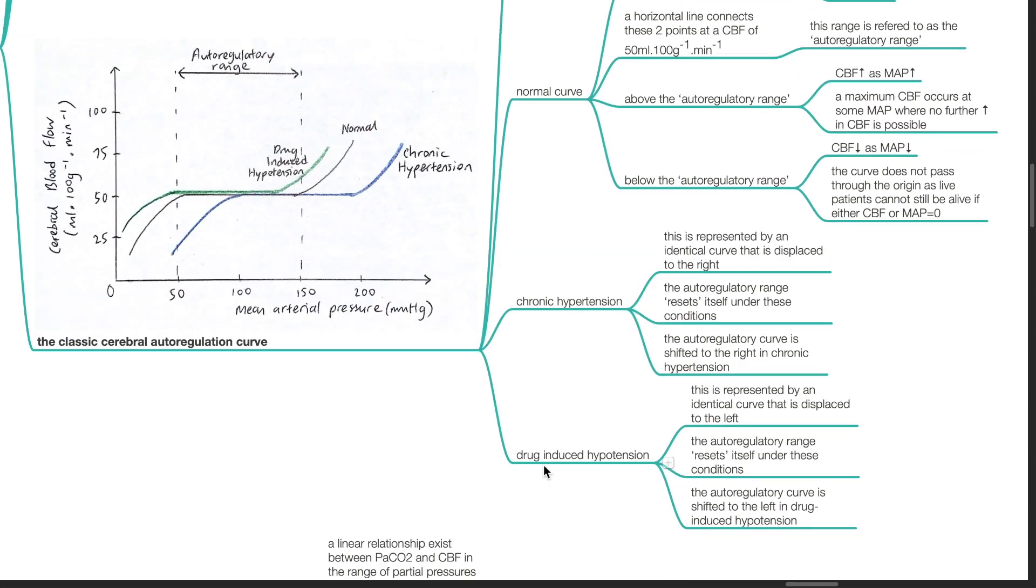The chronic hypertension curve is represented by an identical curve that is displaced to the right. The autoregulatory range resets itself under these conditions. In drug-induced hypotension, this situation is represented by an identical curve that is displaced to the left.